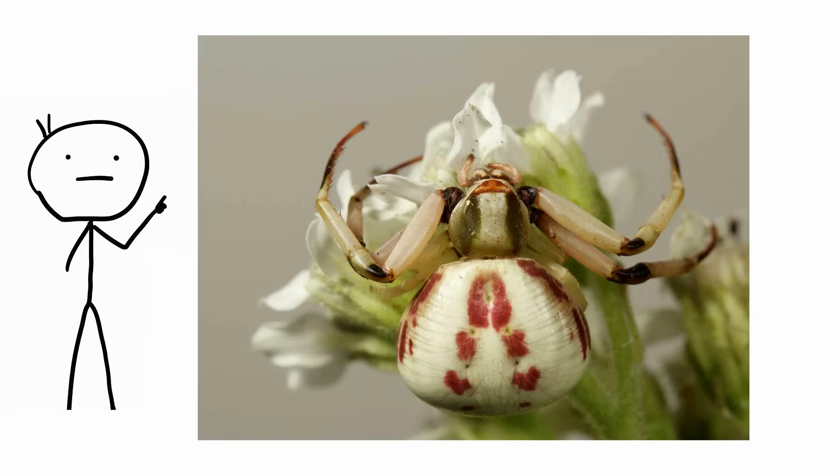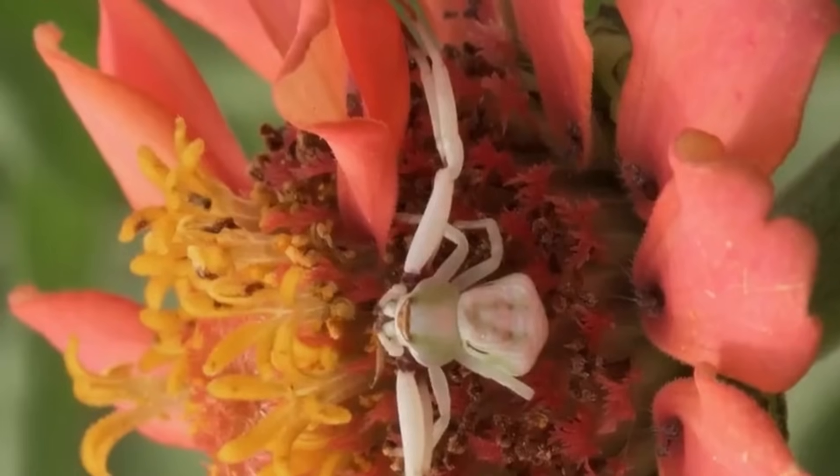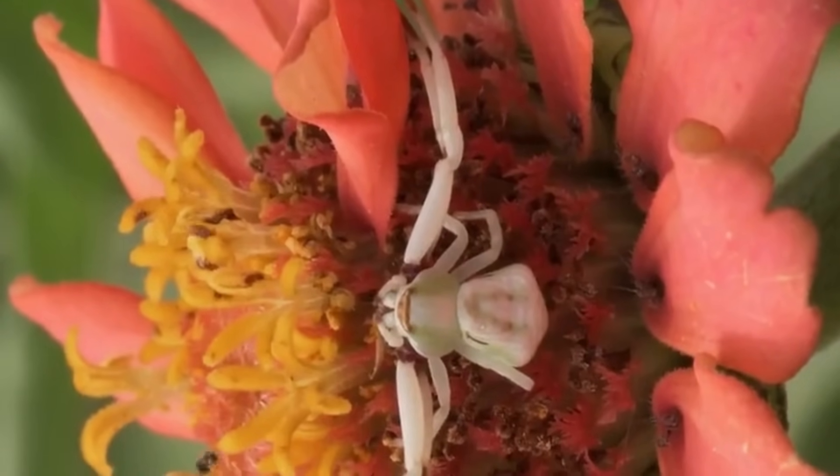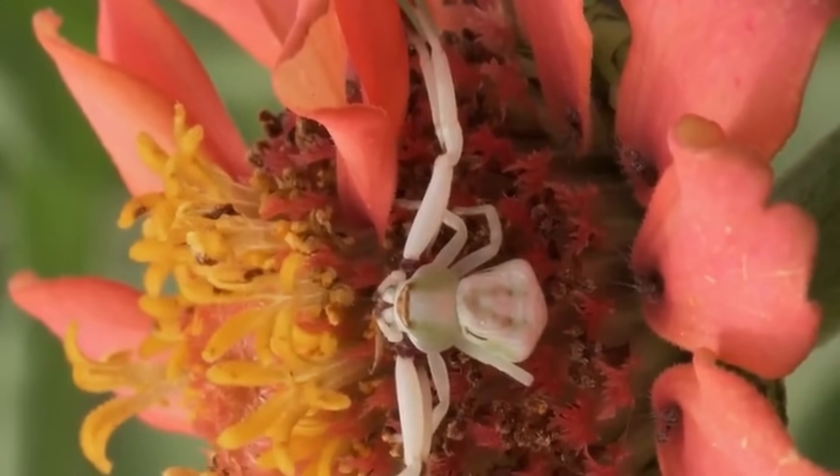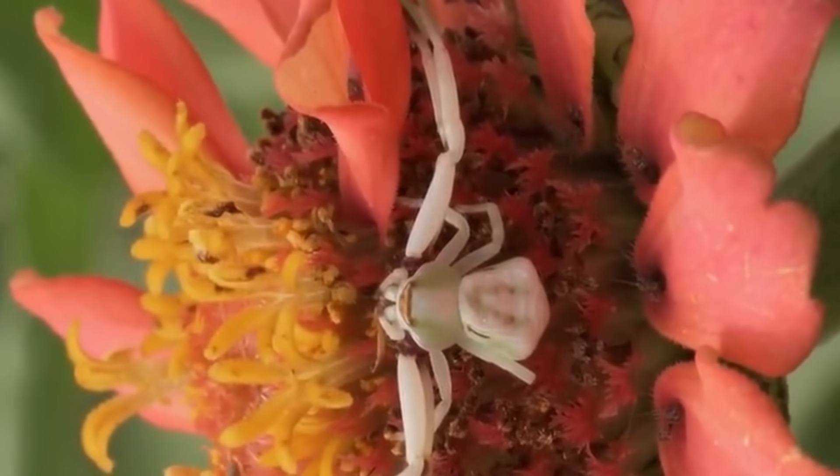White-banded crab spider. Misminoides formozips, commonly known as the white-banded crab spider, is found across the United States and Canada. It was considered a pretty unremarkable spider up until recently, when it was discovered that not only does this spider have camouflage, it has active camouflage.